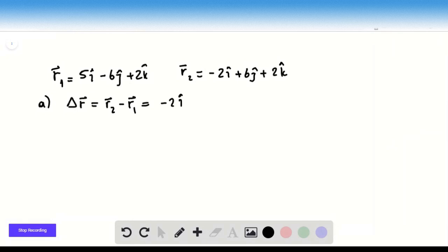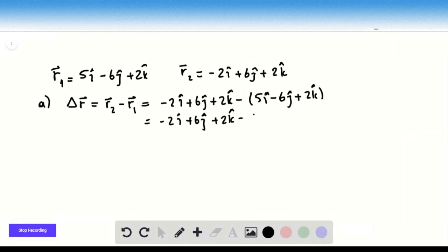So negative 2i-hat plus 6j-hat plus 2k-hat minus 5i-hat minus 6j-hat plus 2k-hat. So negative 2i-hat plus 6j-hat plus 2k-hat minus 5i-hat plus 6j-hat minus 2k-hat.